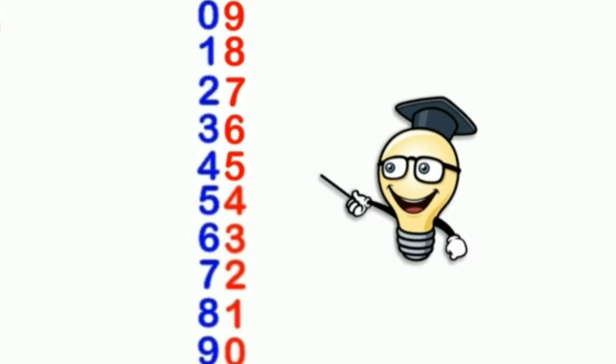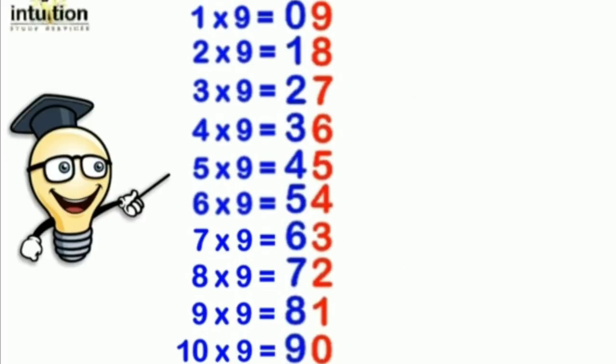So let us recite it again: 9 ones are 9, 9 twos are 18, 9 threes are 27, 9 fours are 36, 9 fives are 45, 9 sixes are 54, 9 sevens are 63, 9 eights are 72, 9 nines are 81, and 9 tens are 90.